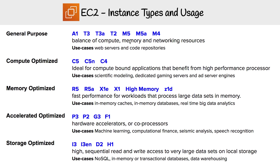Starting with general purpose — it's a balance of compute, memory, and networking resources. They're very good for web servers and code repositories, so you're going to be very familiar with this category.